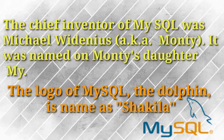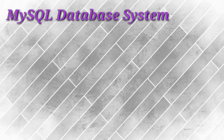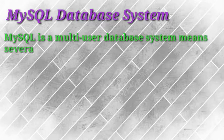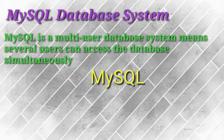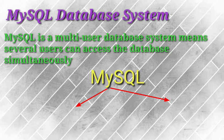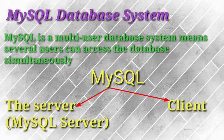Now let us discuss the MySQL database system. It refers to the combination of the MySQL server and MySQL database. MySQL operates using a client-server architecture, where the server runs on a machine containing the databases. Whatever data is stored in the databases is saved on the server, and the client connects to the server over a network to access the data.